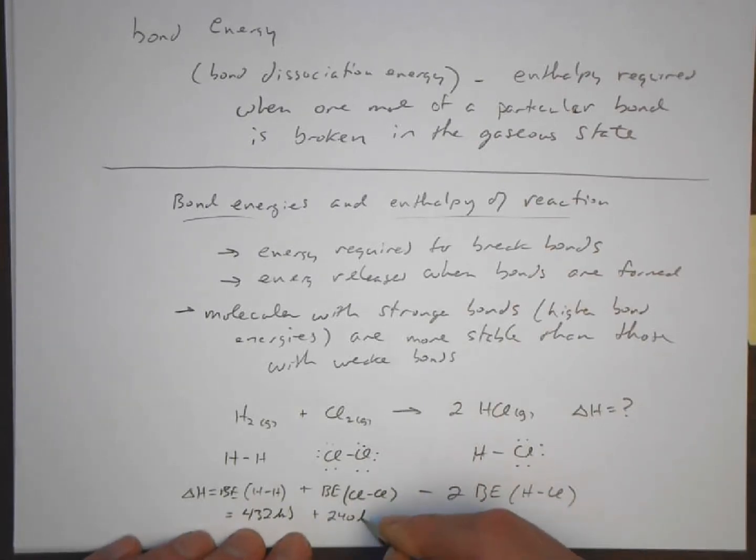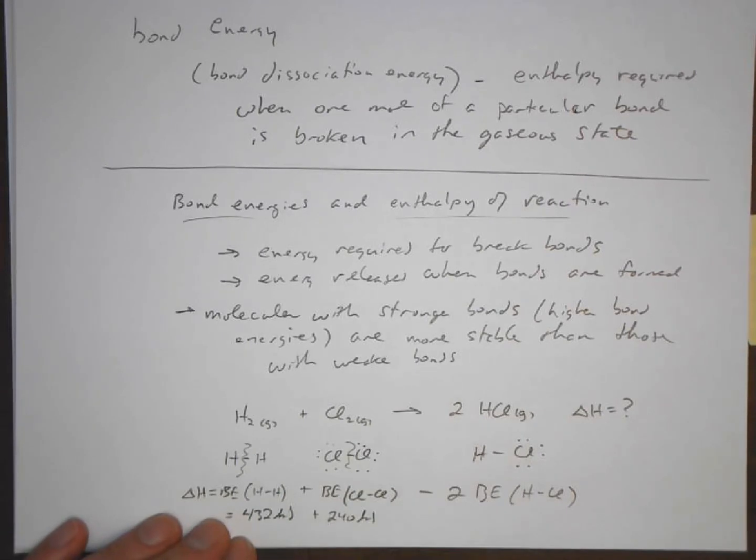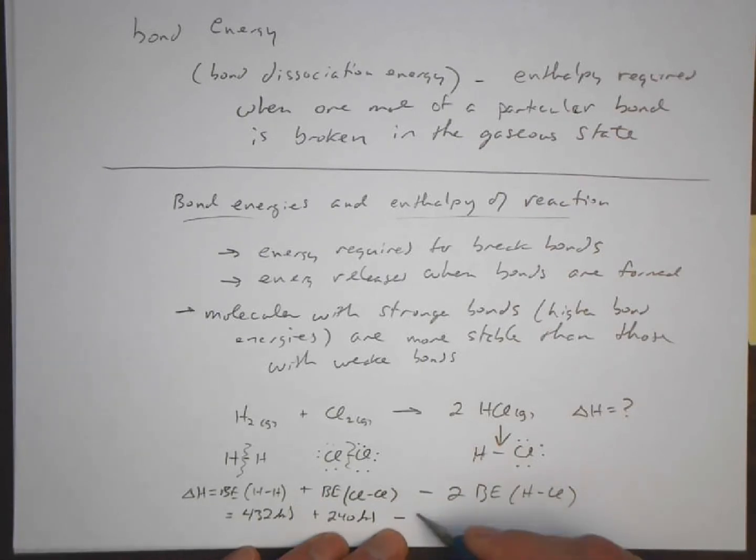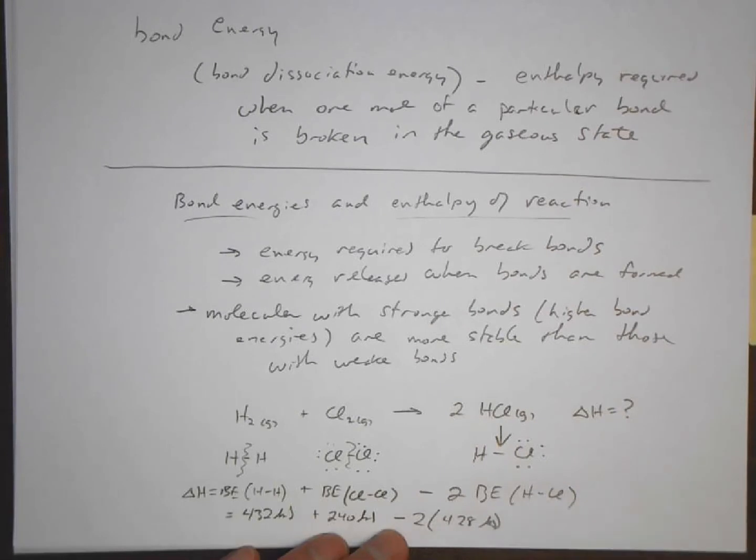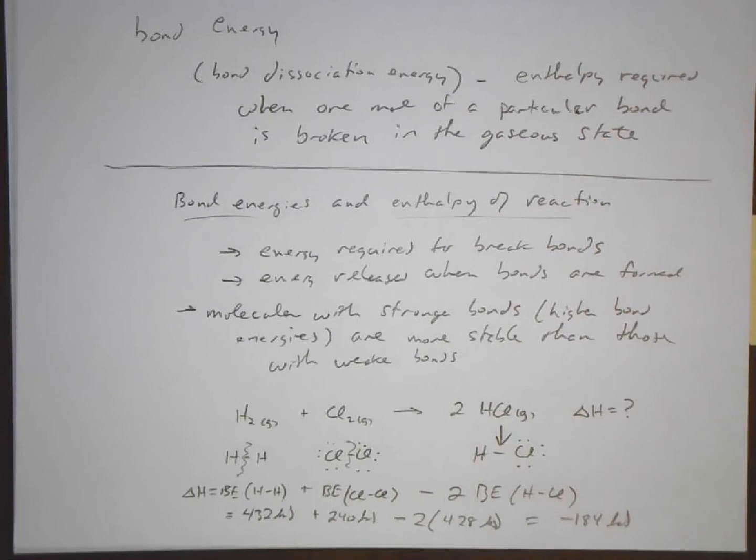But we have 432 kilojoules of hydrogen-hydrogen bonding plus 240 kilojoules per mole of chlorine-chlorine bond. So this is the energy it takes to break those bonds. What we are doing is we're breaking those and we're going to form this one, so we get energy out, negative, when we form the bonds. 428 kilojoules, and that means we can estimate that the delta H for this process is going to be minus 184 kilojoules per mole.